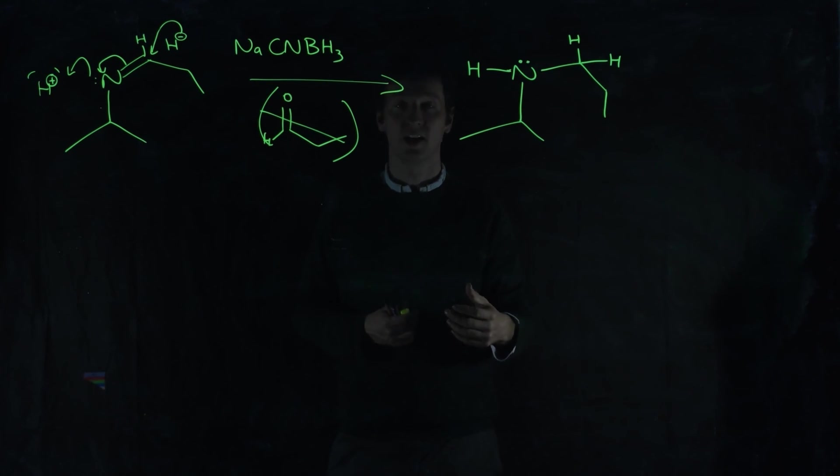It also works. You can use ammonia to make primary amines from an aldehyde or a ketone. Sometimes you can do it with secondary amines. But if you do it with secondary amines, you get different intermediates.